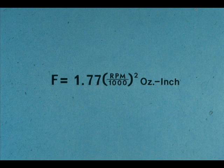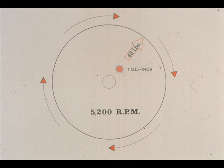You would be amazed at the amount of force that is generated by even the smallest amount of unbalance. This formula, which is reproduced in your workbook reference section, may be used to determine the amount of force generated by unbalance. For example, if this flywheel were turning at 5,200 RPM and it had only one ounce-inch of unbalance, that one ounce-inch would generate nearly 48 pounds of force along the line shown. So, as you can imagine, even the smallest heavy spot can create tremendous amounts of destructive vibration.